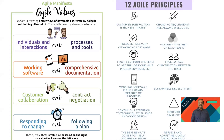To start with Agile values, the first point we need to remember is individuals and interactions over processes and tools. In Agile it's very important that we collaborate with team members instead of relying more on documentation. That way we know what to develop, and the entire team — including QA and BA — are clear on what to deliver.